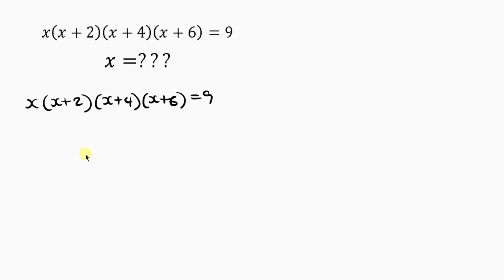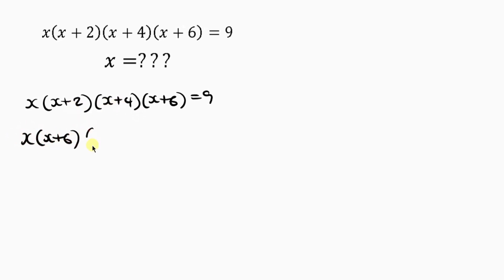How do we do that in a very simple way? I'm going to be pairing the first one and the last one together. So let me bring them together: s(s+6), then the other two which is (s+2)(s+4), equal to 9.